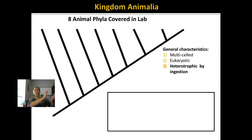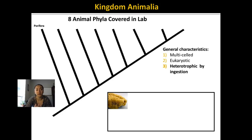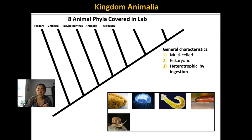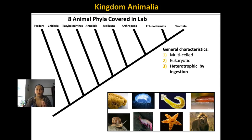We'll go from most primitive to most complex. The three characteristics all of these animals share are: they're multi-celled, eukaryotic, and heterotrophic by ingestion — they have to ingest food through some sort of opening. The eight phyla going from most primitive are: Porifera (sponges), Cnidaria (jellyfish), Platyhelminthes (flatworms), Annelida (segmented worms), Mollusca (snails, octopuses, squid, slugs), Arthropoda (the most diverse group), Echinodermata (the second most diverse), and Chordata (the phylum we belong to).